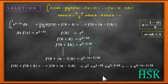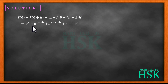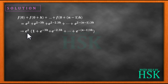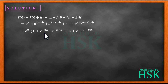The total equals e squared plus e to the power of 2 minus 3h plus e to the power of 2 minus 2 times 3h, and so on. Taking e squared as common from all terms, I can write this as e squared into 1 plus e to the power of minus 3h plus e to the power of minus 2 times 3h and so on. The terms inside the bracket form a geometric progression with common ratio e to the power of minus 3h.